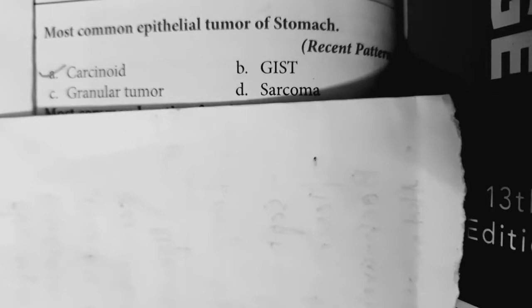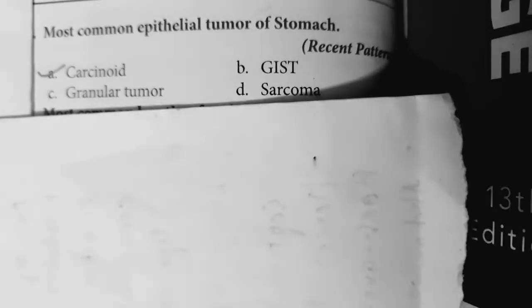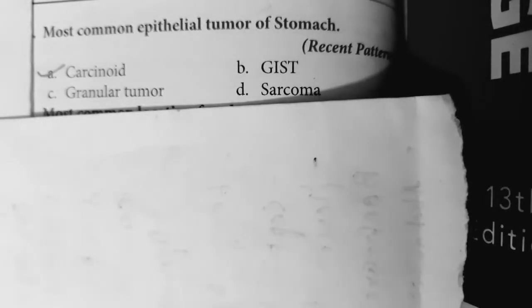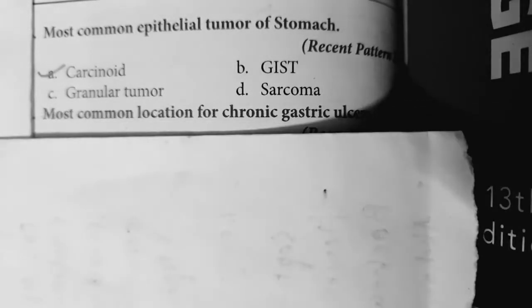Question 1: The most common epithelial tumour of the stomach is carcinoid tumour.